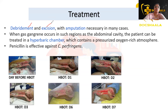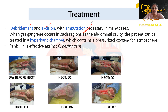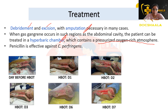Treatment involves debridement and excision of the affected tissue. In some cases, amputation may also be necessary. When it occurs in the abdominal cavity, the patient is treated in a hyperbaric chamber — a chamber which consists of a pressurized, oxygen-rich atmosphere.